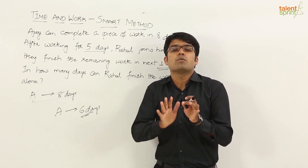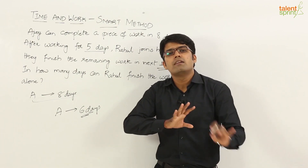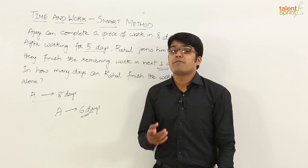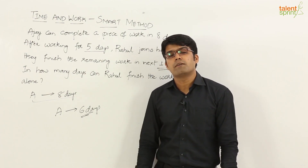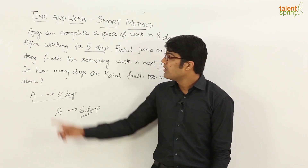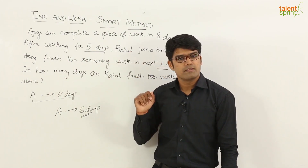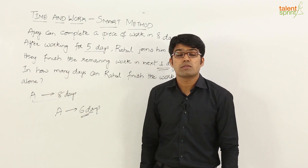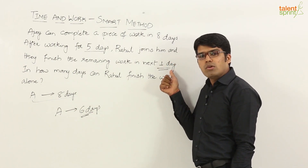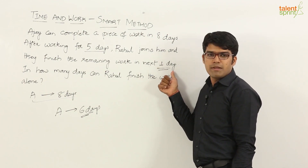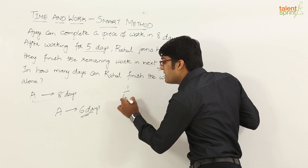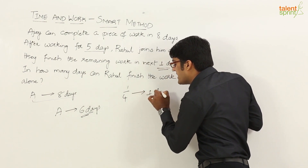So Ajay has contributed and finished three-fourths of the work from his side. It is obvious that if Ajay has done three-fourths of the work, the remaining one-fourth was done by Rahul. Rahul has finished one-fourth of the work. But for how many days did Rahul work? He worked for only one day, because after Rahul came into the picture, they finished the remaining work in one day. So Rahul can finish one-fourth of the work in just one day.